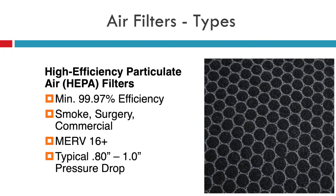The highest efficiency filter would be the high efficiency particulate air filters, or HEPA filters. These have a minimum of 99.97% efficiency in order to meet the UL listing and are also used to remove smoke in hospitals and commercial applications. They have a MERV rating of 16 and above. With HEPA filters, the typical pressure drop can be 0.8 all the way up to 1 inch, and they're not usually used in residential HVAC applications because of this unless they're standalone units.